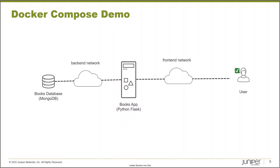Docker Compose is very useful for testing. To illustrate its use, we're going to build a very simple two-tier application. We're going to create a simple web app that shows us a list of books drawn from a books database. To do this, we'll use the standard Mongo database image from Docker Hub, and populate it with a sample set of book data inside a web application written using the Python Flask library.